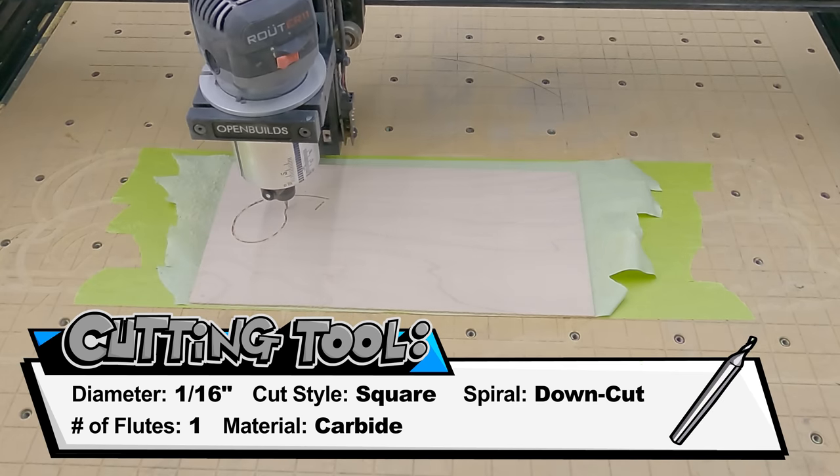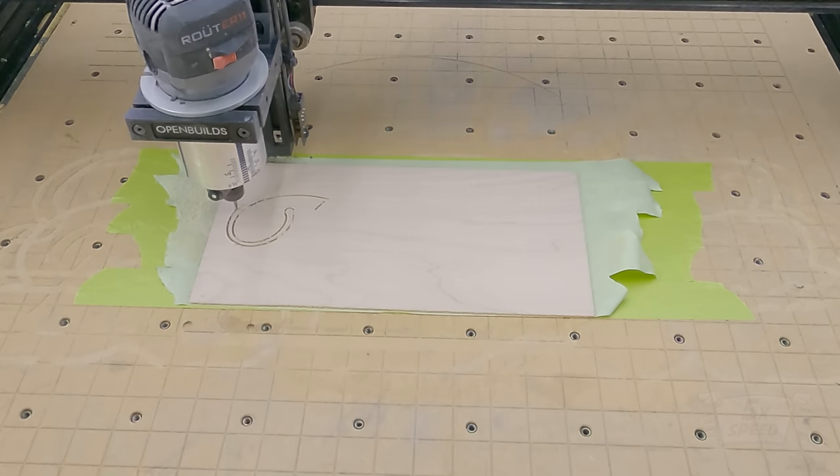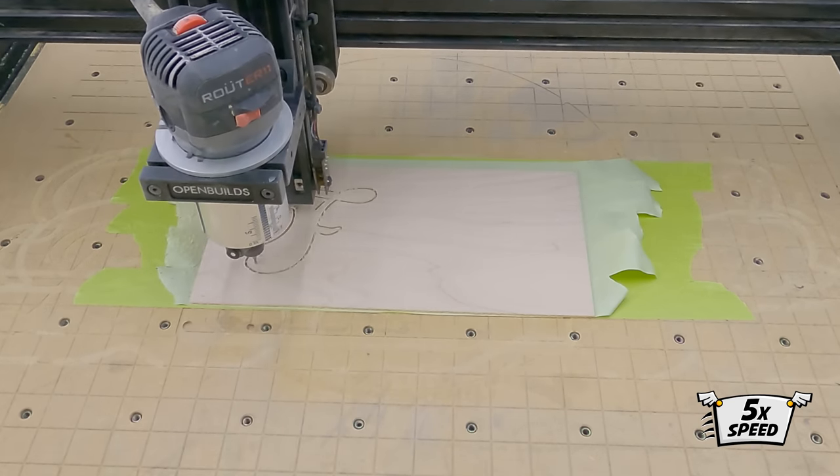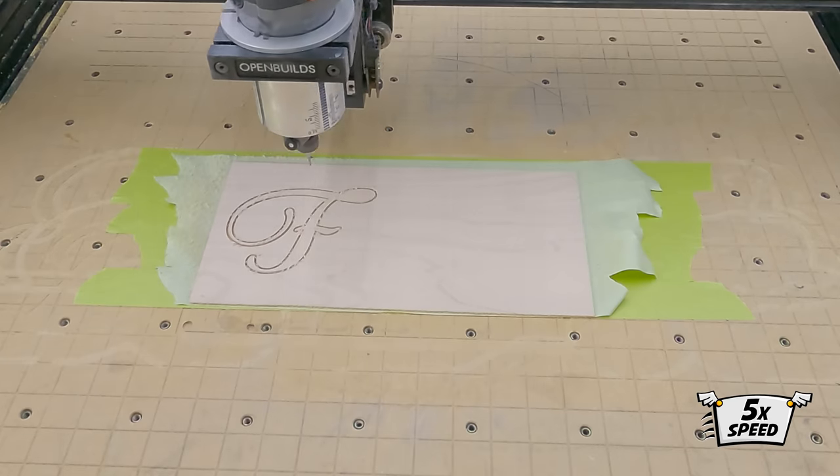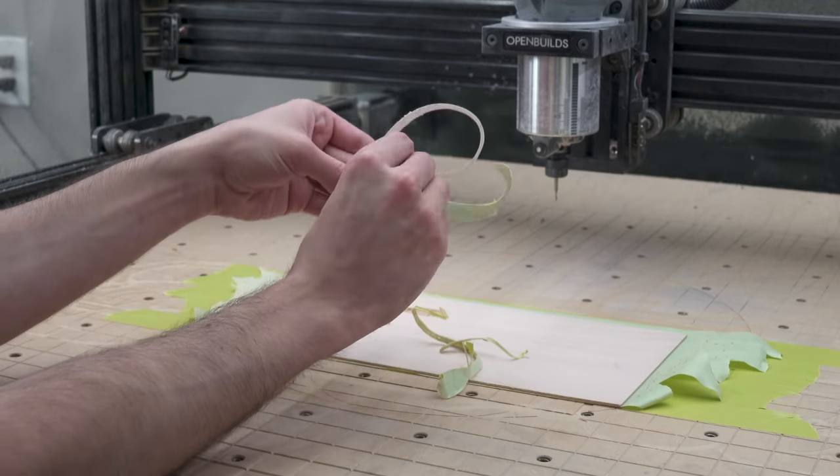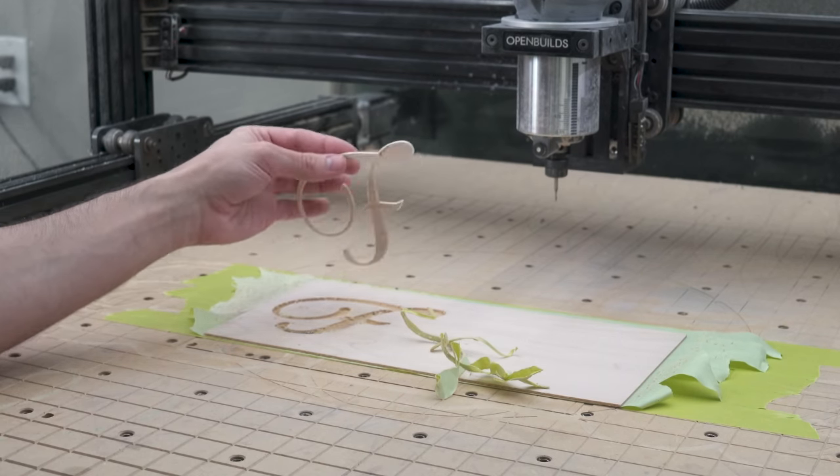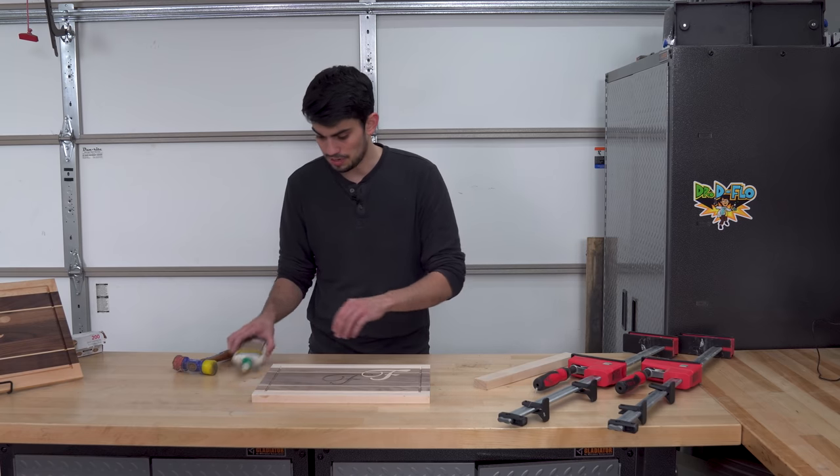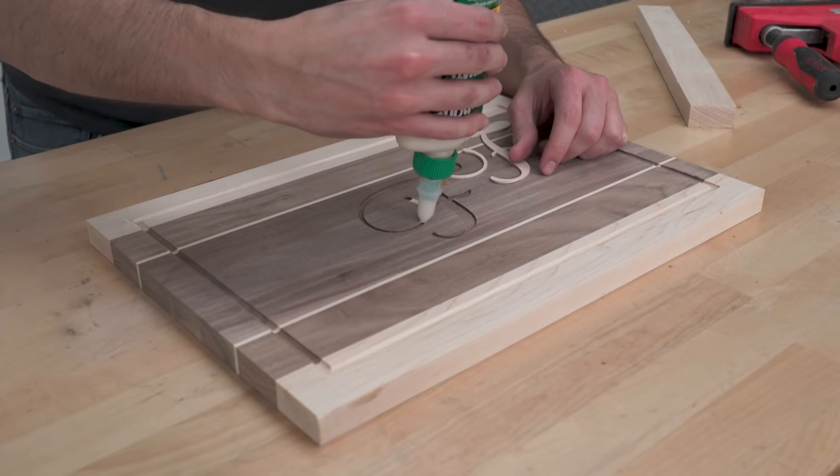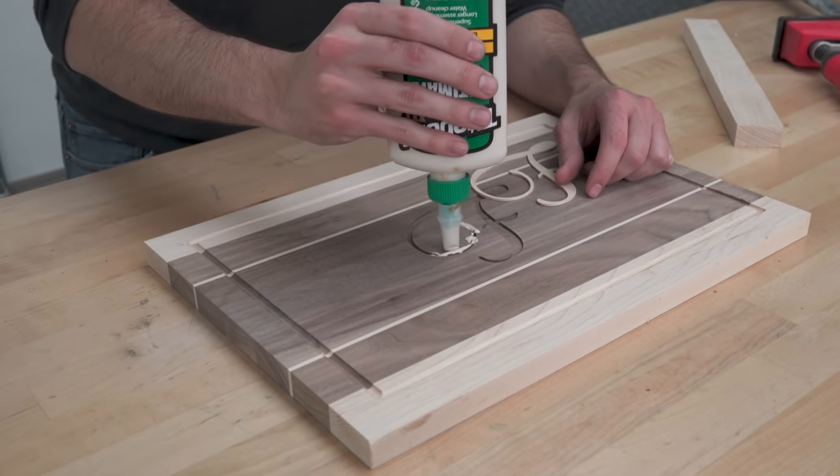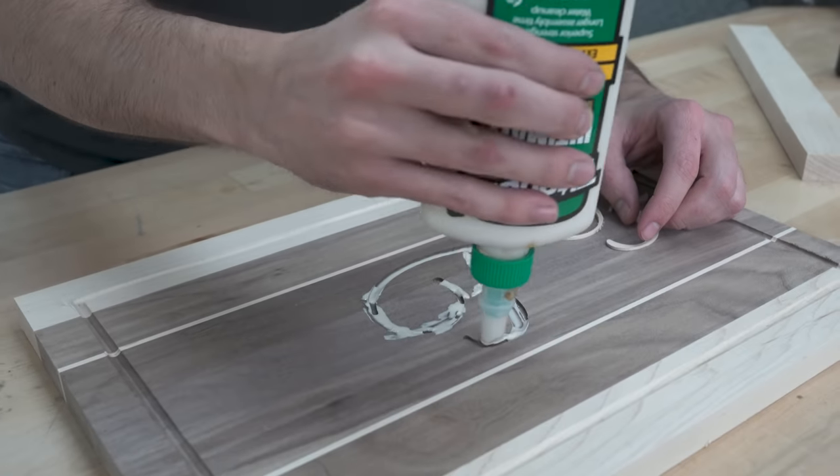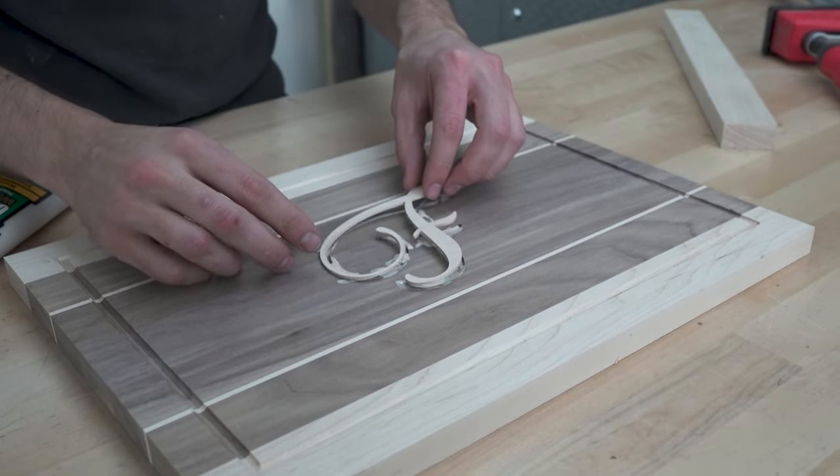When I designed the inlay, I made it three thousandths of an inch smaller than the pocket that it will sit in. This may seem inconsequential, but I find that three thou to be the difference between a snug fit and an impossible one. So I'm going to put a little bit of wood glue in the pocket. And moment of truth, will it fit?